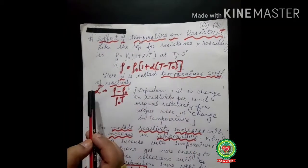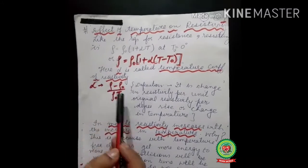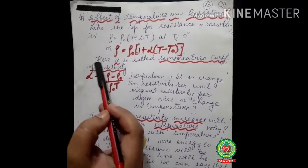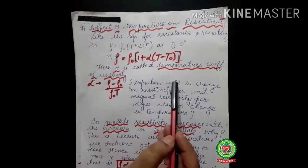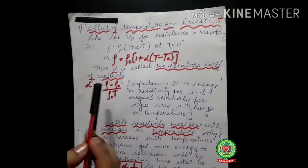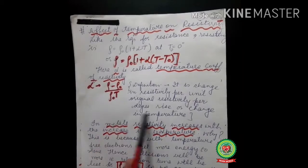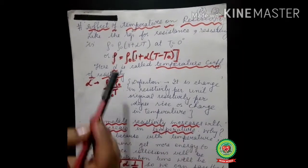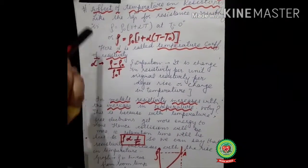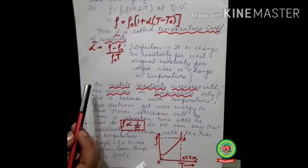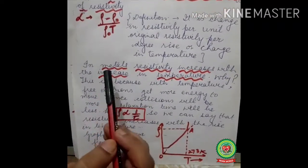Alpha here is the temperature coefficient of resistivity. Its definition is: it is the change in resistivity per unit original resistivity per degree rise in temperature. This gives us the expression for alpha in terms of resistivity. Now let's look at the effect of temperature on resistivity for various materials: metals, non-metals, alloys, and others.